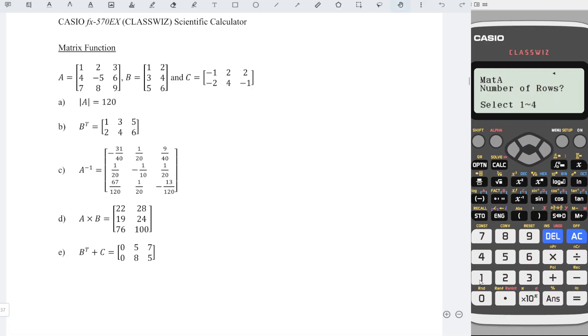Number of rows: we have 1, 2, 3 rows, and 1, 2, 3 columns. So we input 3 and 3.